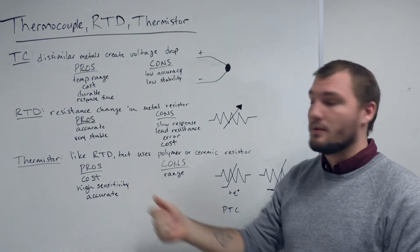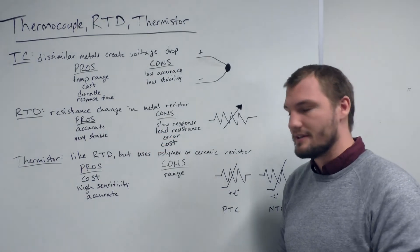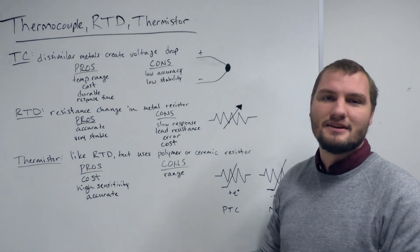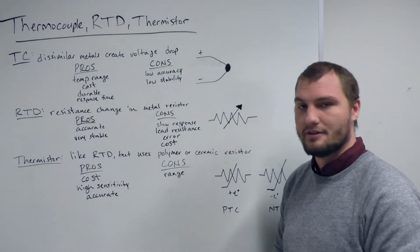In terms of sensitivity, whereas RTDs are in the milliohms per degree C range, thermistors tend to be hundreds or thousands of ohms per degree C.